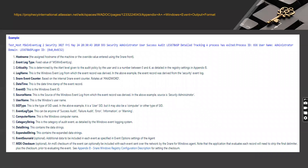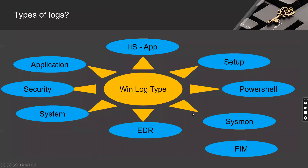Here is a screenshot from Prophecy International's website — you can see the different fields available in Windows logs: hostname, criticality, log name, date/time, event ID, source name, username, and more. You can visit that link for reference. Regarding types of logs: a single Windows log source has different types of logs — application logs, security logs, system logs, setup logs, PowerShell logs, Sysmon logs (if Sysmon is installed), file integrity monitoring logs, and EDR logs. A single log source gives you different kinds of logs.